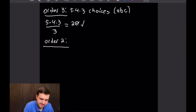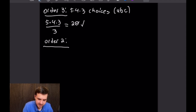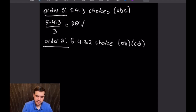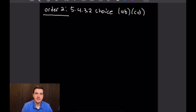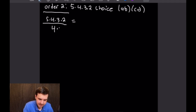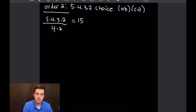For order-2 elements (products of two disjoint 2-cycles): there are 5×4×3×2 ways to choose a, b, c, d. We divide by 4 for repeated representations within each 2-cycle, and also by an extra 2 because disjoint 2-cycles commute. So the count is (5×4×3×2)/(4×2) = (5×3) = 15 elements of order 2.